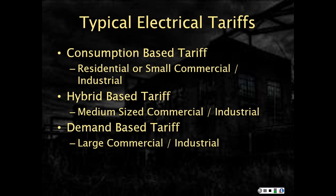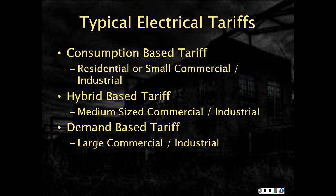You'll notice I'm using the term commercial or industrial — there is a subtle difference. An industrial building, as far as electrical rates are concerned, means that the building makes something. So an industrial rate means the company actually manufactures something. A commercial rate means they don't make something — industrial means something's being made or produced; commercial means they're not making anything.